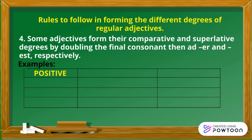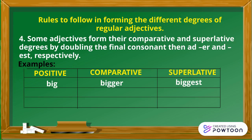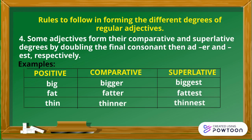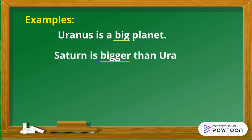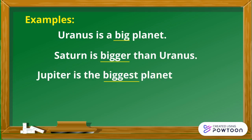Examples. Positive: big. Comparative: bigger. Superlative: biggest. Positive: fat. Comparative: fatter. Superlative: fattest. Positive: thin. Comparative: thinner. Superlative: thinnest. Examples — Uranus is a big planet. Saturn is bigger than Uranus. Jupiter is the biggest planet in the solar system.